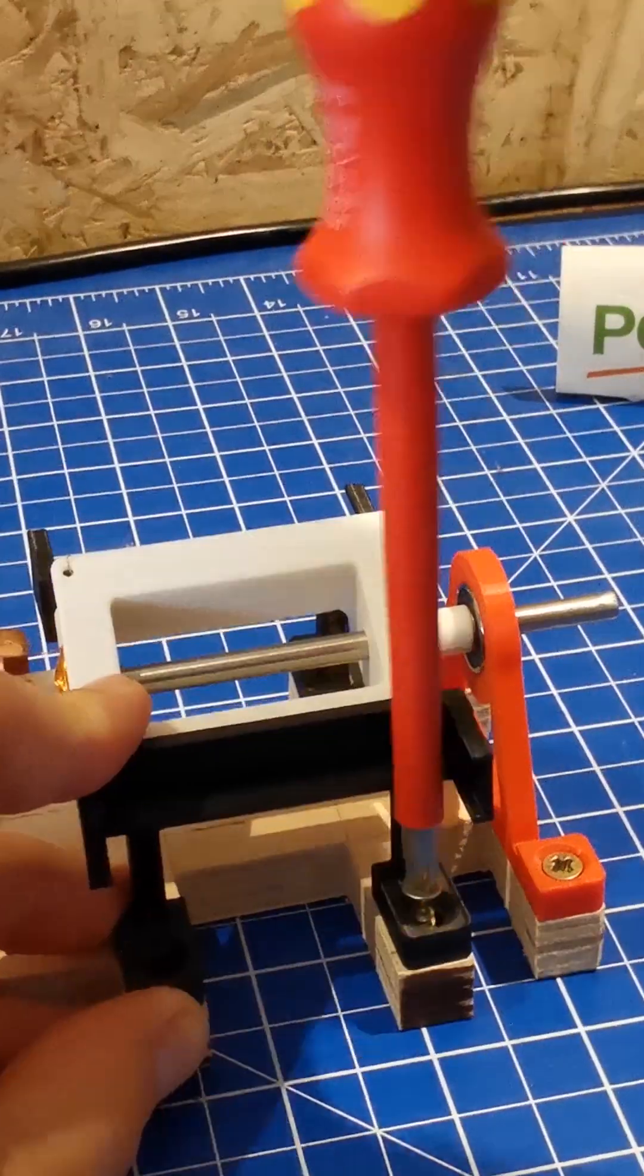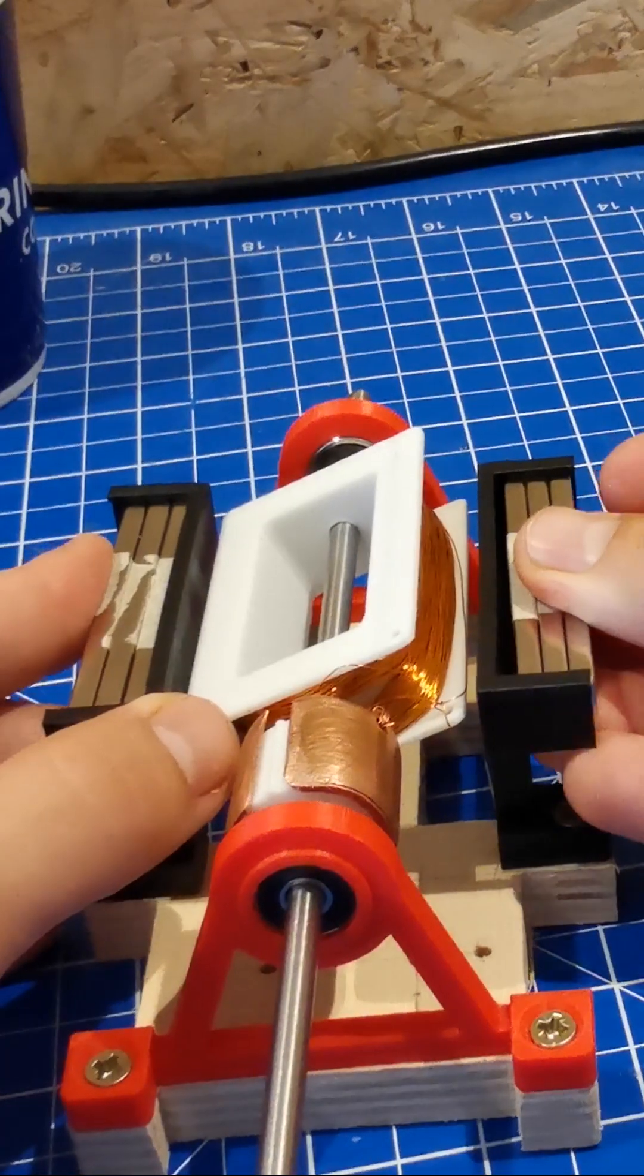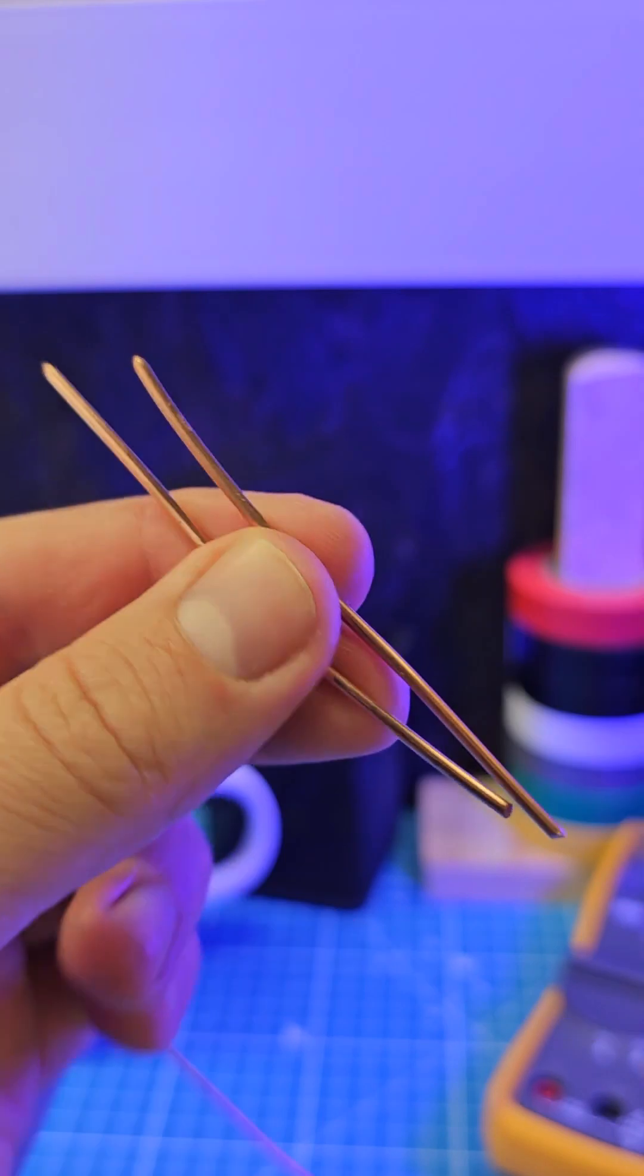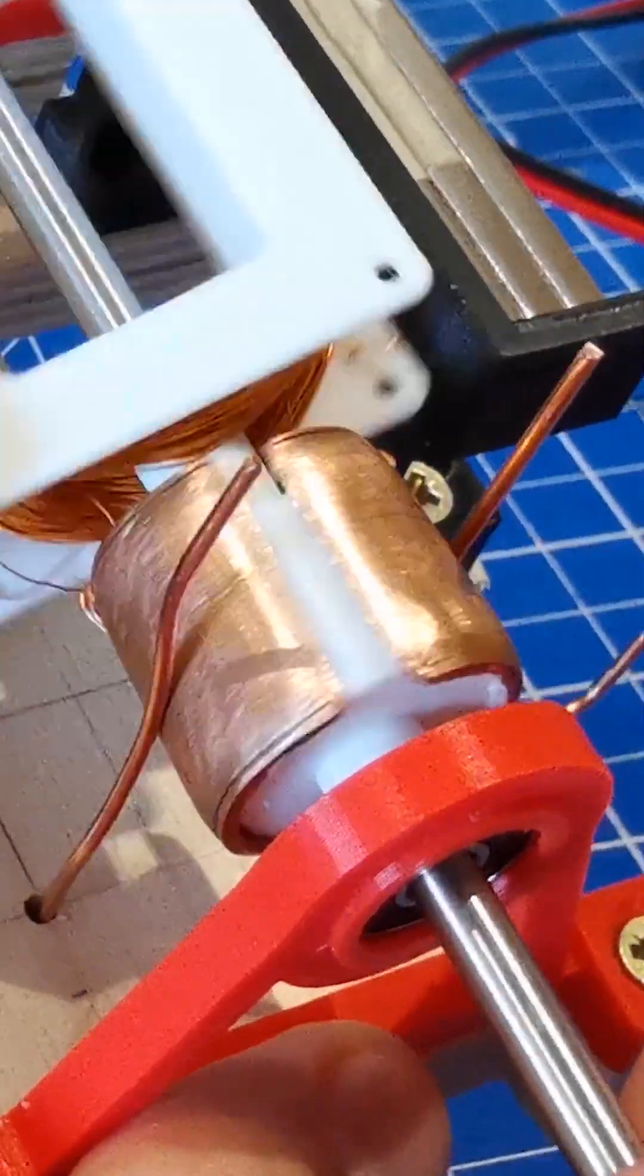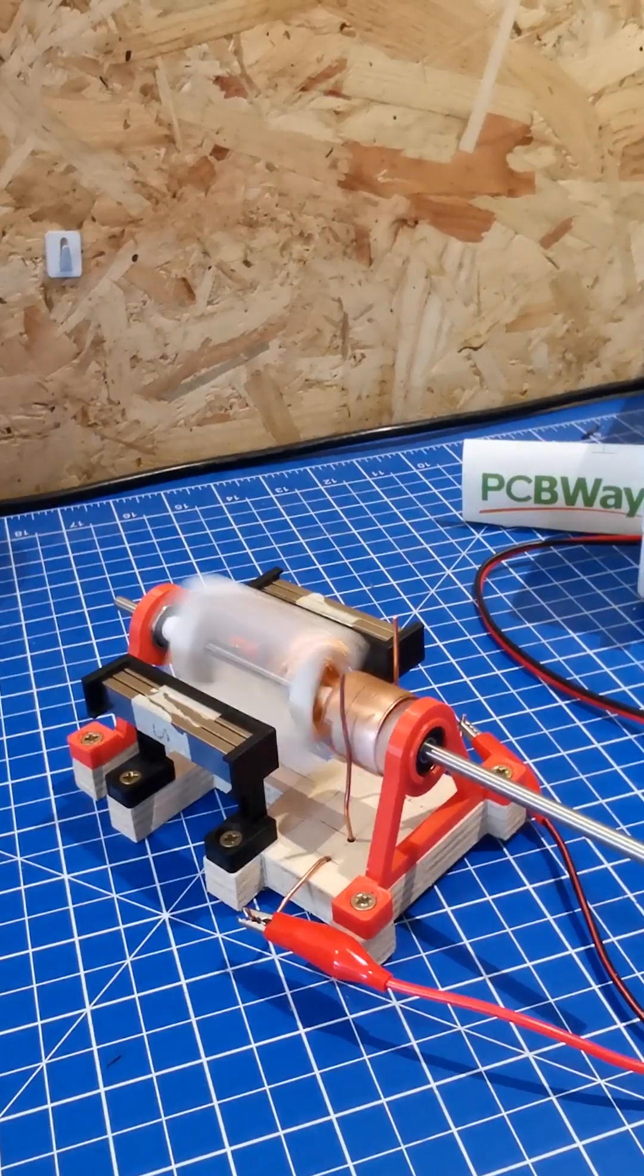Take the stator arms and secure them. Insert the magnets on each side. Use some copper wire or a paper clip to make the electrical connections. Apply a voltage and watch it rotate.